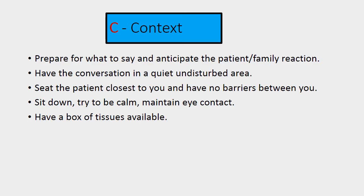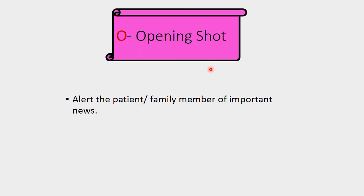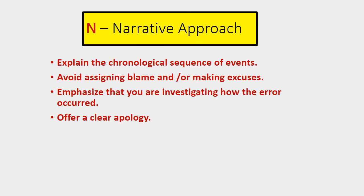O — Opening Short: alert the patient or family member of important news. For example: 'This is difficult, but I have to tell you that your brother is not responding to medicines' or 'He is getting worse.' You might say, 'This is hard, but I have to share some information with you,' or 'I must talk to you about the condition of your brother.' You can also thank them for being present before delivering the news.